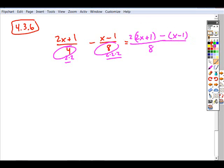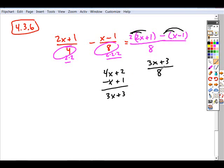So when we look at this, we can now combine our terms in the numerator here. Distributing our two, we get four x plus two. Distribute our negative, we get minus x. Minus a negative becomes plus one. And so looking at this, we have three x plus three as our numerator all over eight.